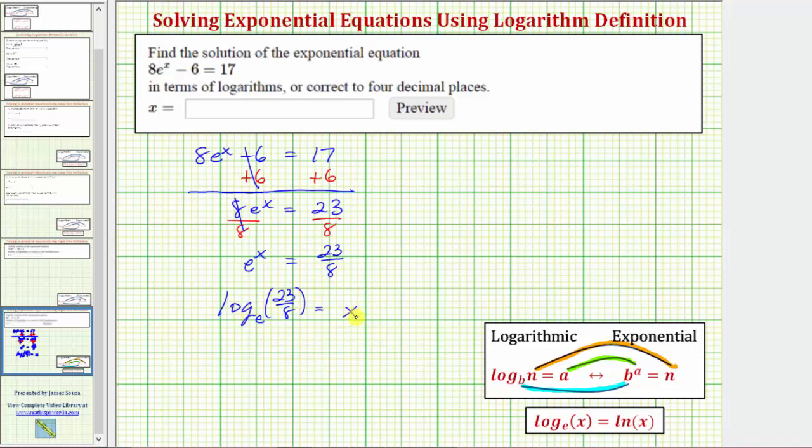Notice how now the equation is solved for x. To double check our work, if we were going to write the log equation as an exponential equation, we'd have base e raised to the power of x equals 23/8. So our log equation is correct, but let's use natural log notation instead of using log base e.